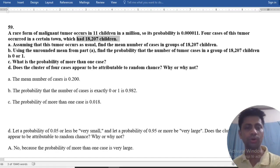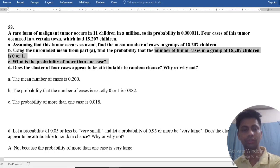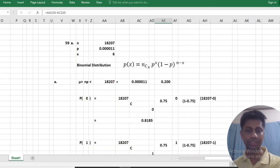Assuming that the tumor occurs as usual, find the mean number of cases using unrounded mean from part A. N equals 18,207, P equals 0.00011.